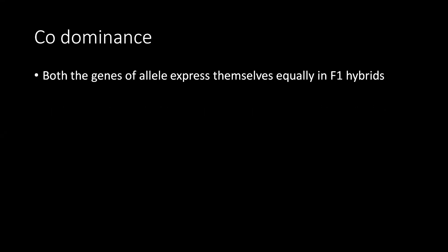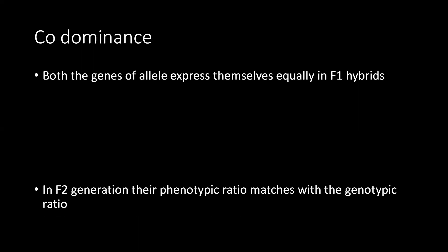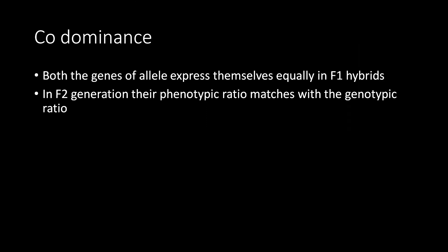In co-dominance, both genes express themselves equally in F1 hybrids. Unlike incomplete dominance where both alleles do not express equally, in co-dominance both alleles express equally. For example, instead of getting a blend like pink, you get patches — like red and white patches seen in cattle.